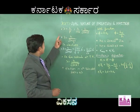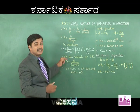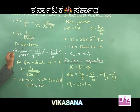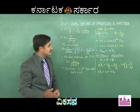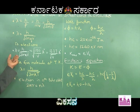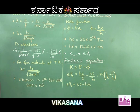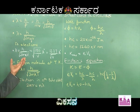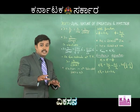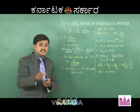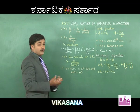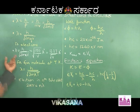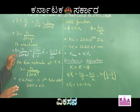De Broglie connects the material property with the wave property — momentum is related to wavelength lambda. The relation is λ = h/p, where p is momentum. De Broglie wavelength is further written as λ = h/mv. Momentum in the denominator can also be written in terms of kinetic energy E, so it becomes λ = h/√(2mE). For a charged particle accelerated through potential V with charge Q, it becomes λ = h/√(2mQV).